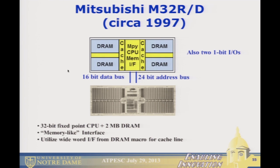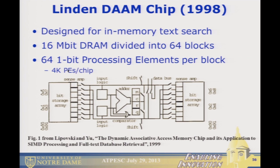A bit later, Mitsubishi built a DRAM part with two banks and a 32-bit microprocessor down the center, using the row buffers on those banks as cache lines — trying to use more of that internal bandwidth. There was another part called the Linden-Dam chip: a 16-megabit DRAM divided into 64 blocks, each with 64 one-bit processors, built to do very high-speed in-memory text searching.